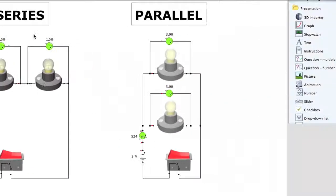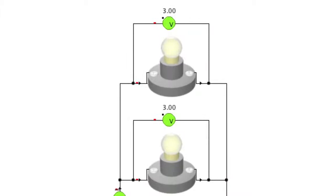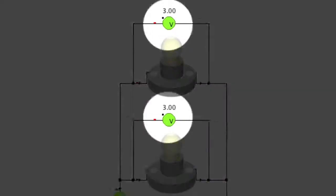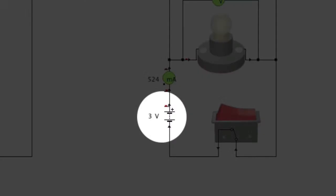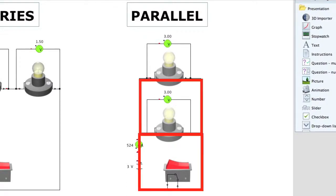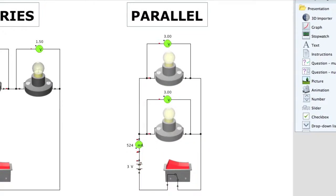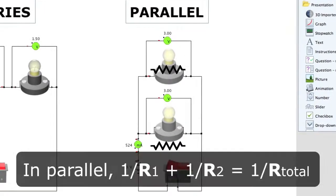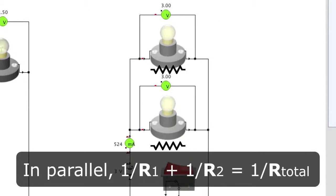Now let's take a closer look at the parallel circuit. Besides the brighter bulbs, one of the first things we notice is the voltage drop across each bulb is 3 volts, the same as the battery. This makes sense when you consider that each bulb has its own separate loop in the circuit that leads directly to the battery. With the bulbs in separate loops, the individual total resistance of the bulbs is not added together.